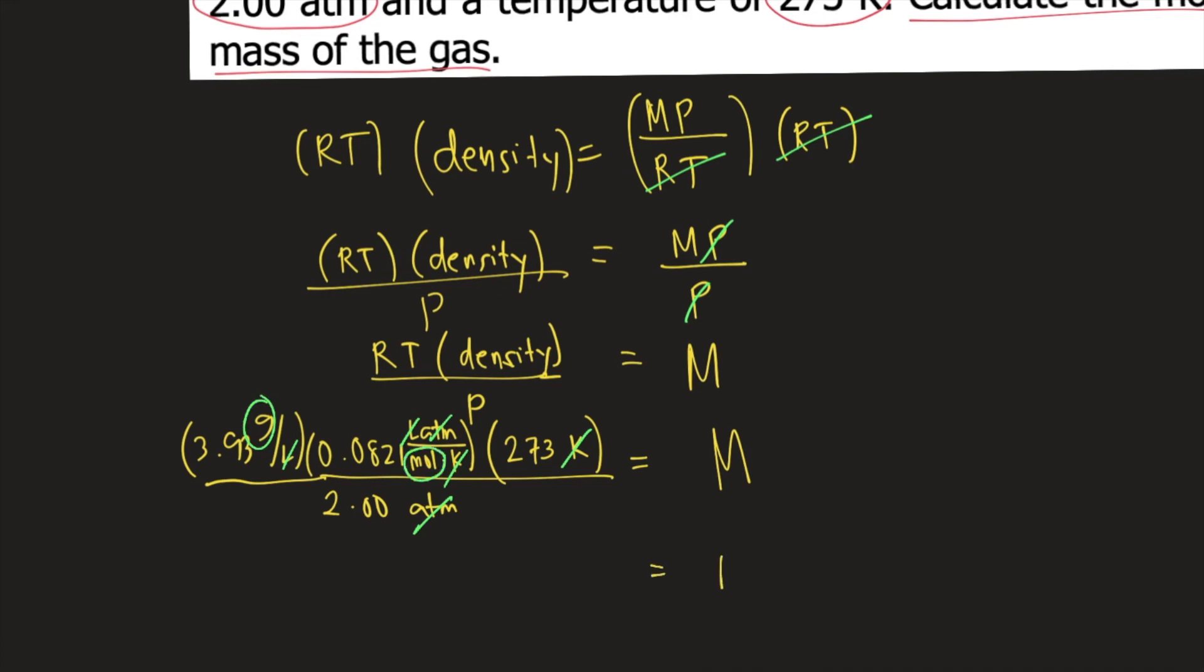So molar mass is in grams per mole. And if you solve this in your calculator, 3.93 times 0.0821 times 273 divided by 2, this is equal to 44.04 grams per mole. And this is the answer to the question.